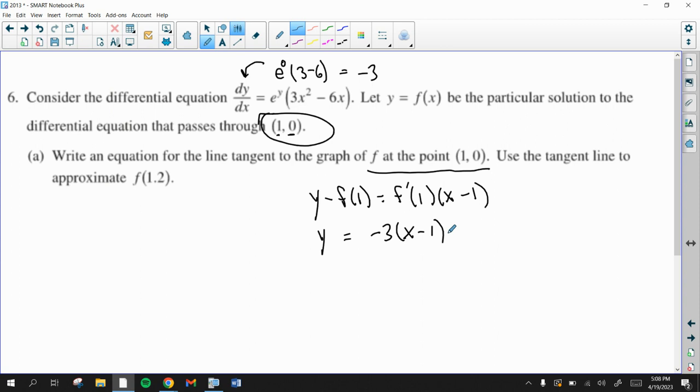Now we're going to use the tangent line to approximate f of 1.2. So f of 1.2 can be approximated by the tangent line's value there, which is negative 3 times (1.2 minus 1). And you're done with this question. You don't have to go any further. If you do, you will get negative 0.6. And we're done.